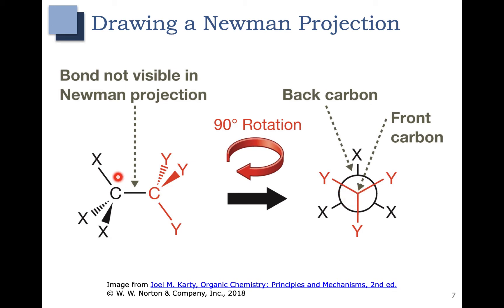In the Newman projection, the back carbon is hidden — you can only see the front carbon, which is that one right there. As you rotate the molecule towards the front, in the back you should have the X groups in black, which are over here, and then attached to the front carbon, you have the Y groups in red.